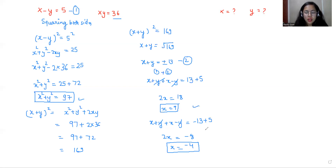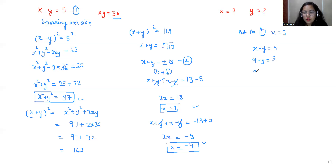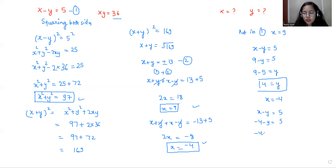We have two values of x. Similarly, we find y by substitution. Putting x equals 9 into equation 1: 9 minus y equals 5, so y equals 4. Putting x equals minus 4 into equation 1: minus 4 minus y equals 5, so minus 4 minus 5 equals y, and y equals minus 9. So we have two solution pairs: x equals 9 with y equals 4, and x equals minus 4 with y equals minus 9.